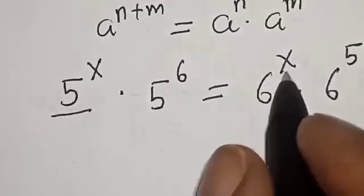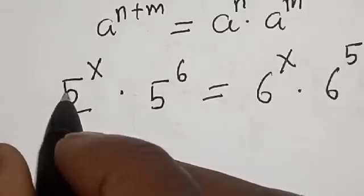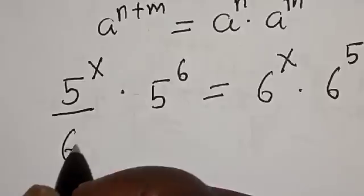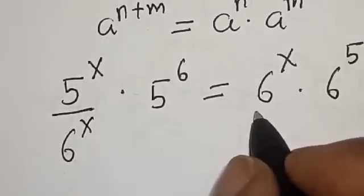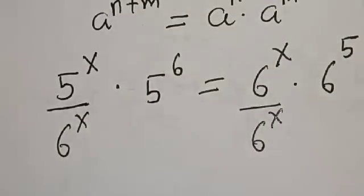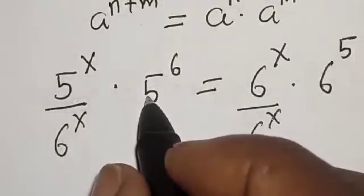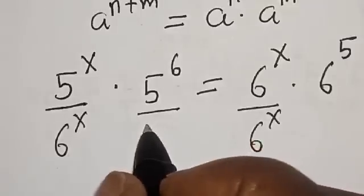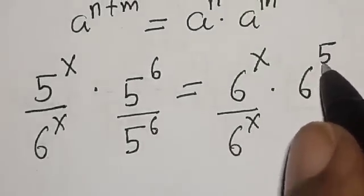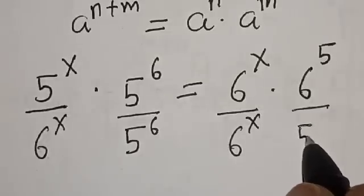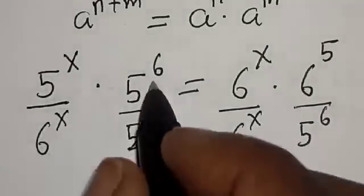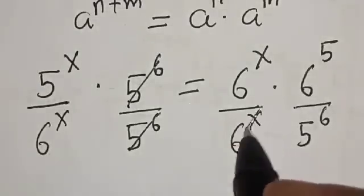Let's divide 5 raised to power s by 6 raised to power s. And divide this 6 raised to power s by 6 raised to power s. And let's divide this 5 raised to power 6 by 5 raised to power 6, and 6 raised to power 5 by 5 raised to power 6. That is the logic — this one will cancel this and this one will cancel this.